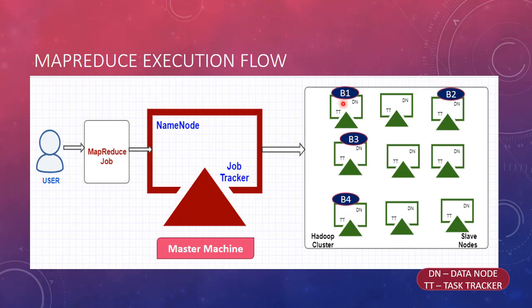B1 is stored in slave machine 1, B2 is stored in slave 3, B3 is stored in slave 4, and B4 is stored in slave machine 7. Now to process this data, as a user or programmer I will be writing a MapReduce program. Assume that I have written a MapReduce program to process this data. I am not specifying what kind of program or application — I am not concerned about that now.